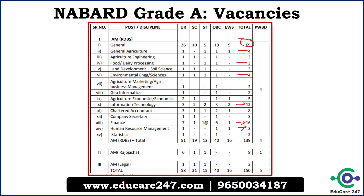So total in Grade A they have 139 vacancies. They have some other vacancies also — in Rajbhasha they have 8 vacancies, and in legal they have 3 vacancies, so the total comes to around 150 vacancies. Keep in mind, one can apply for only one section — you cannot apply for more than one section. If you are applying for the general section, you cannot apply for any specialized section, and if you are applying for any specialized section, you cannot apply for the general section.